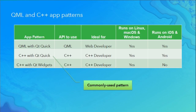The second app pattern is C++ with Qt Quick. Your UI is in QML, but your backend is in C++. Your actual runtime code will be written in C++. If you're a C++ developer, this is a great pattern — we're seeing more people pick it up because it scales really well on mobile platforms. Like QML with Qt Quick, it runs on all different platforms.